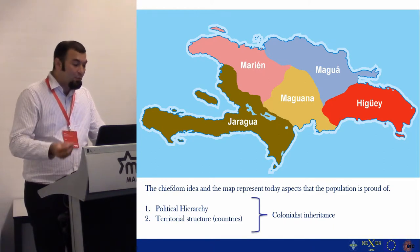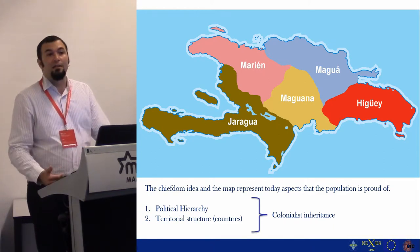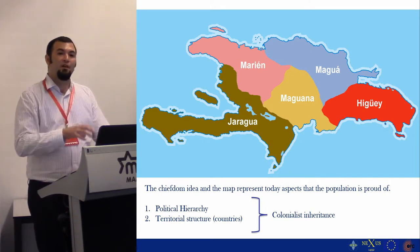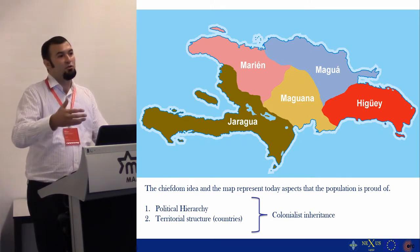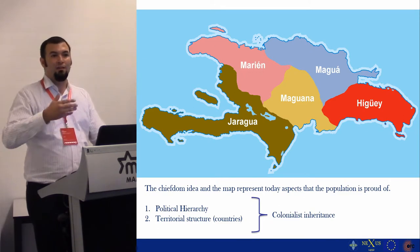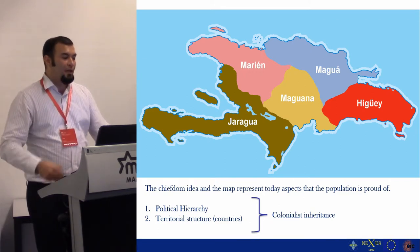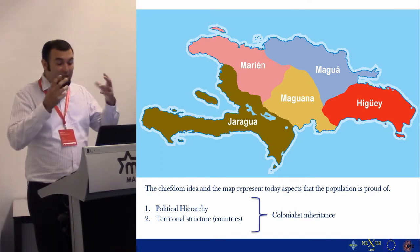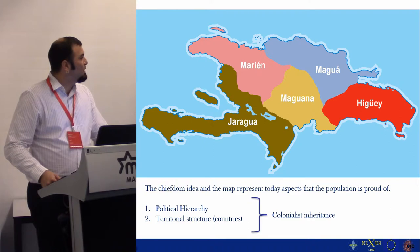However, we argue that these two aspects are actually a colonialist inheritance, because those are the elements that the Spaniards, when they arrived to the island, identified in the indigenous population as something they understood, and which was later described to create a biased image of the indigenous population.